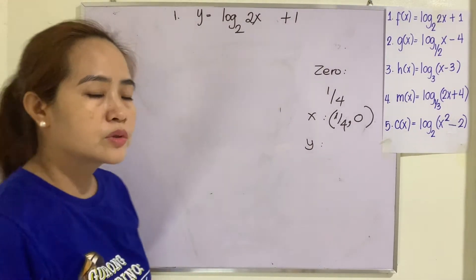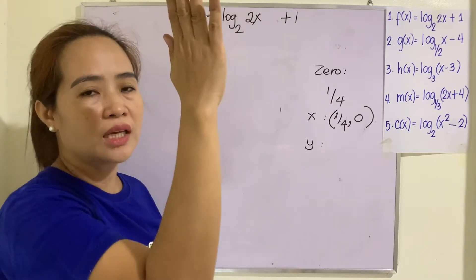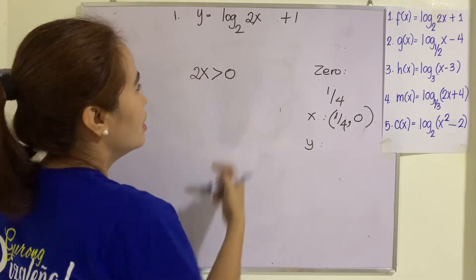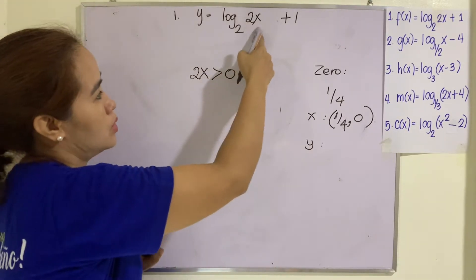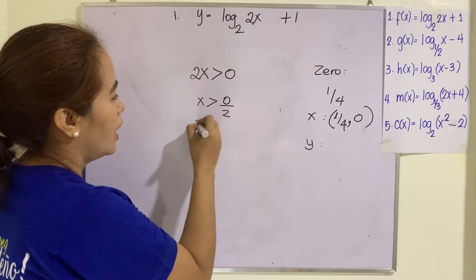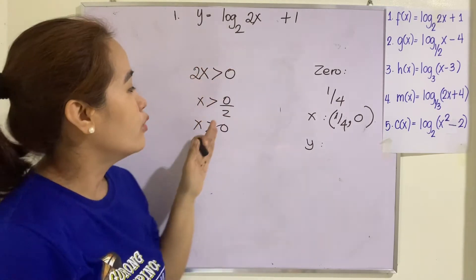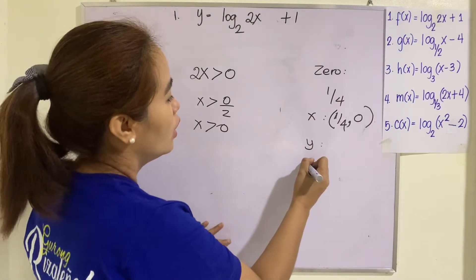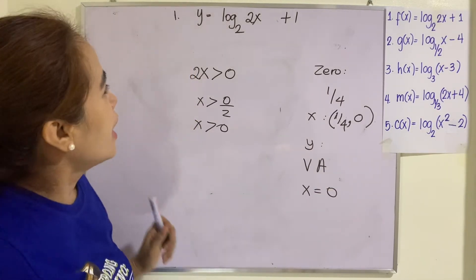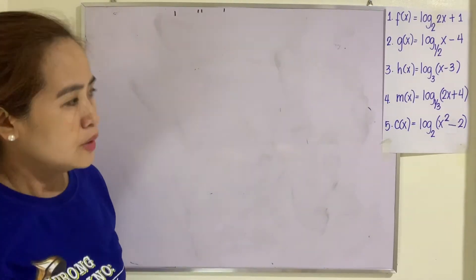In a logarithmic function there is no horizontal asymptote — what we have is only the vertical asymptote. The argument 2x must be greater than zero, since the argument cannot equal zero nor be negative. Solving: x is greater than 0, meaning the graph is asymptotic to x equals 0. Therefore the vertical asymptote is x equals 0.